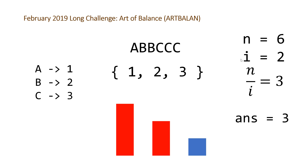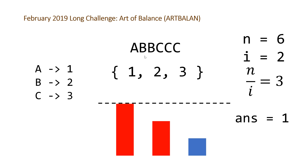Moving to the next valid i, which is 2, we look at the two most frequently occurring characters and want each to have frequency n/i = 3. We only need to change one character — the A to a B. Visualize a bar at the n/i = 3 line: C already meets that frequency, but B doesn't quite reach it. The cumulative difference is: 3 minus 3 equals 0, plus 3 minus 2 equals 1. So the answer for i=2 is 1, requiring only changing the A.